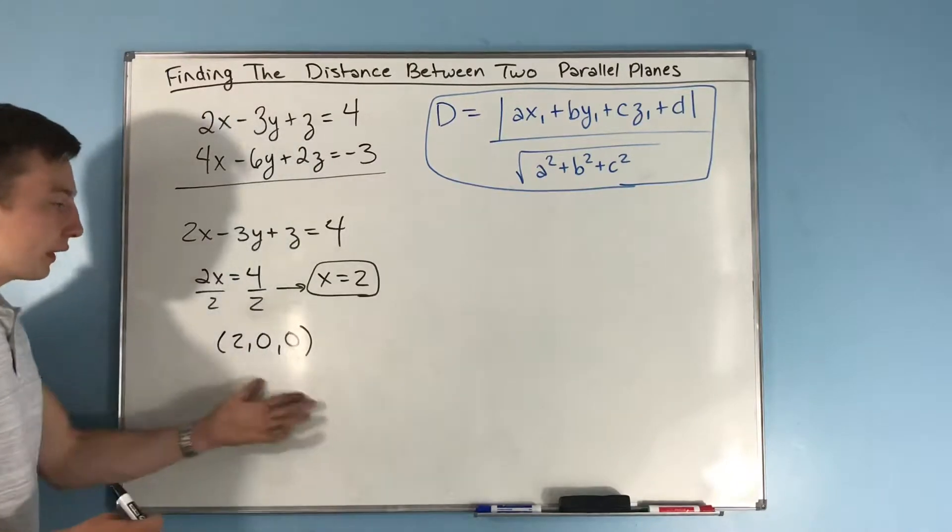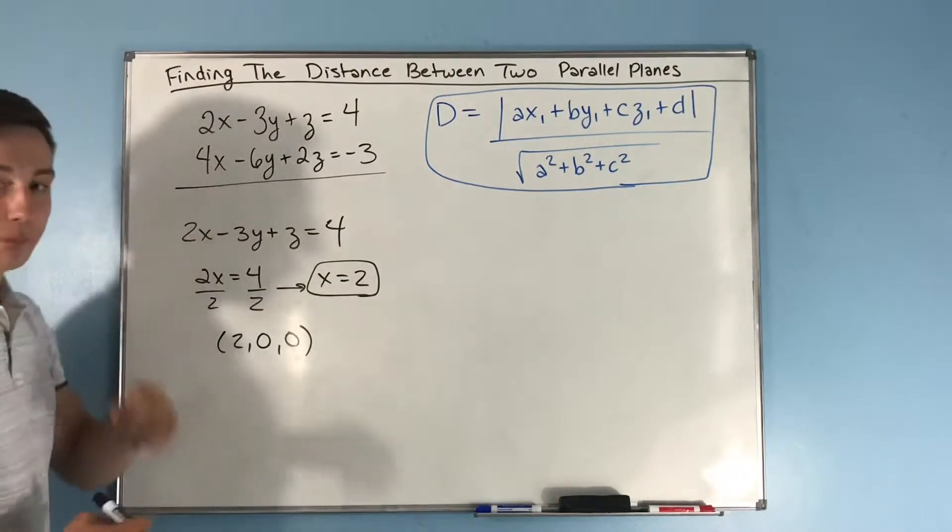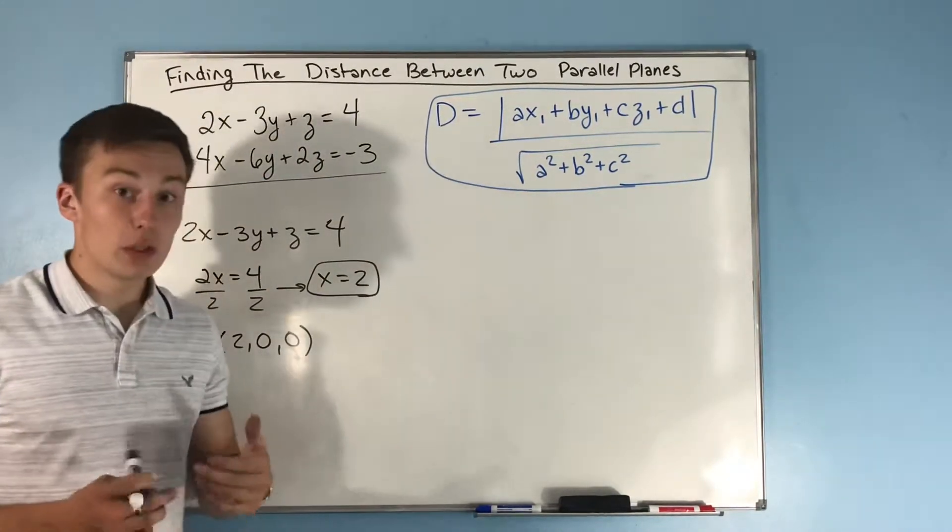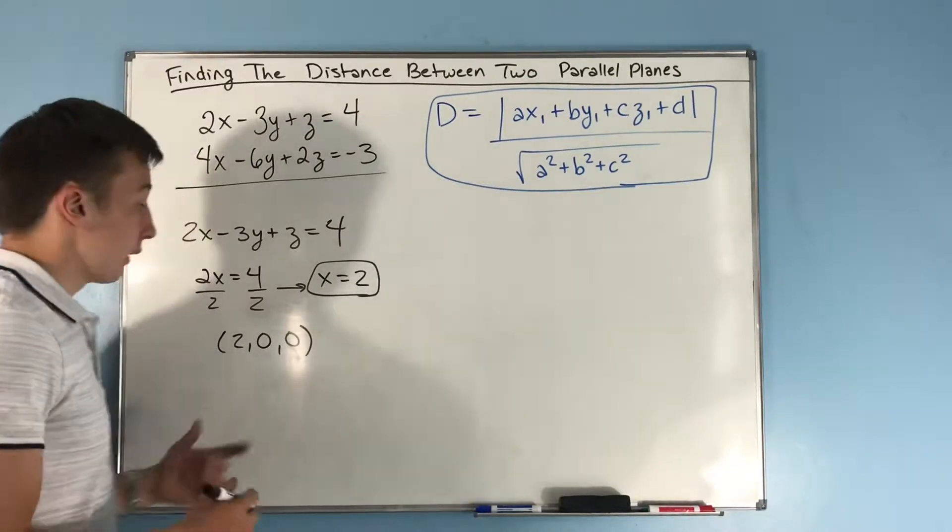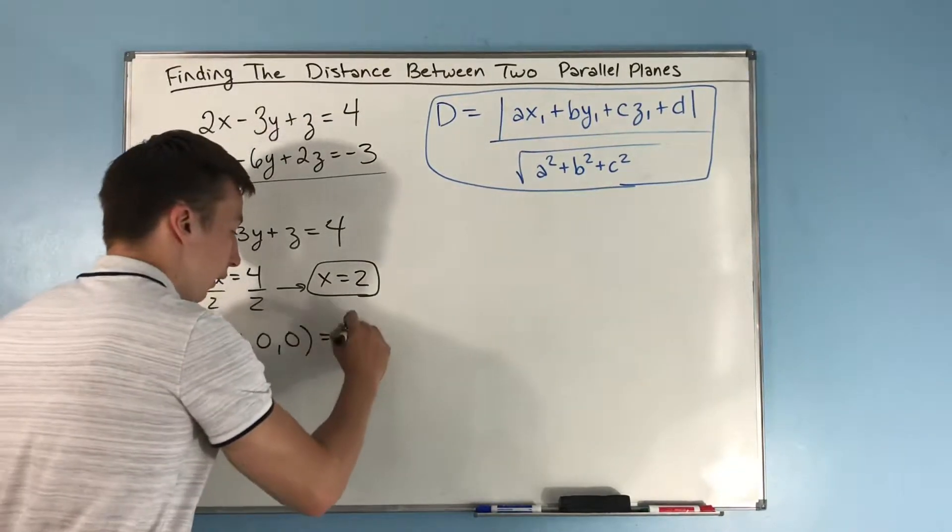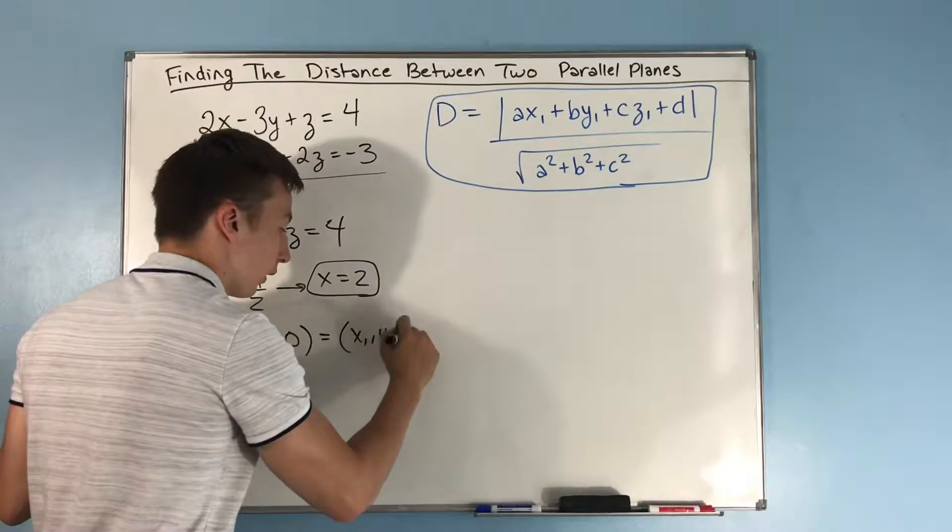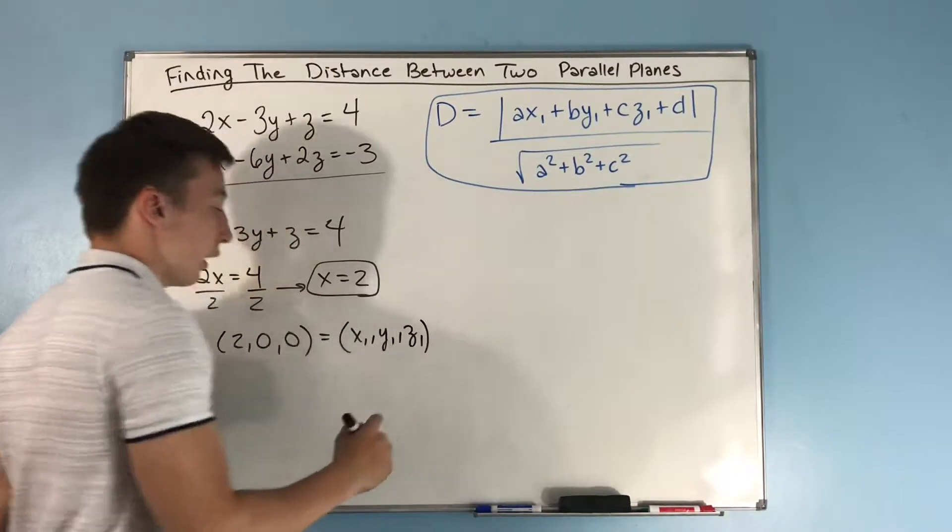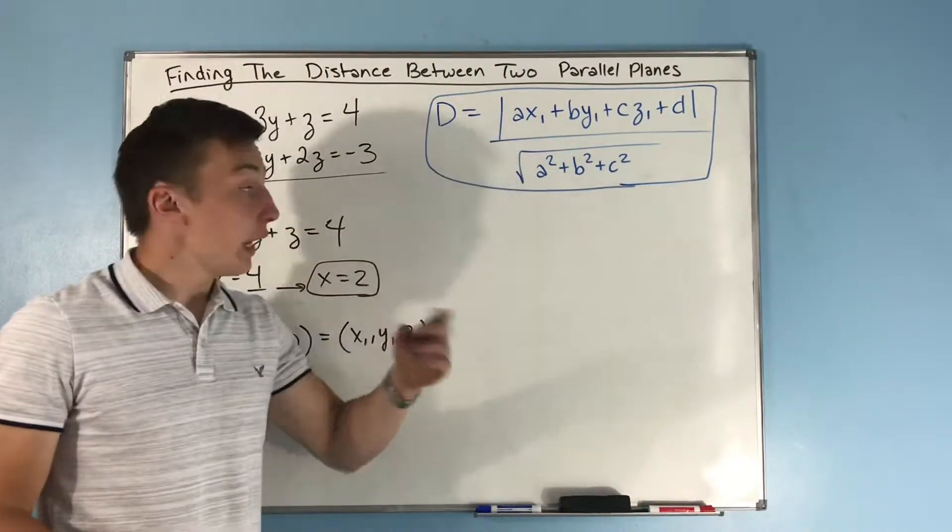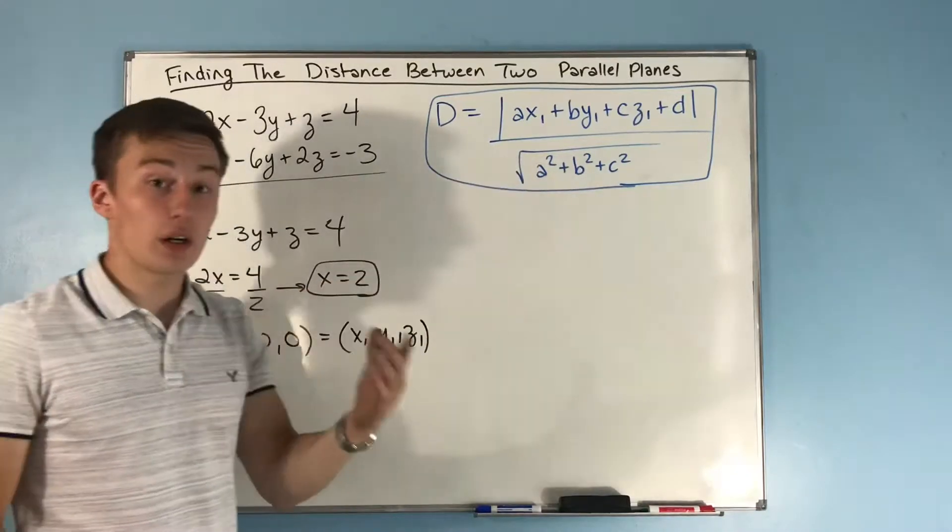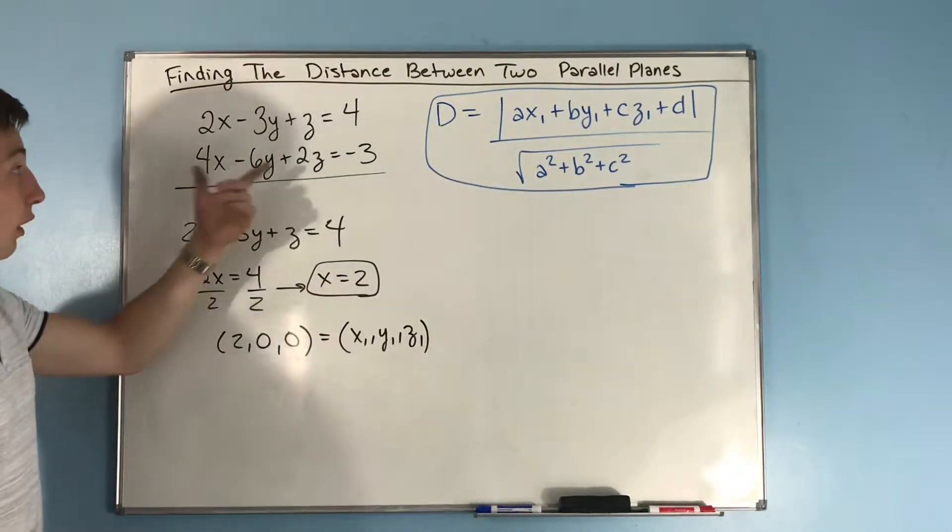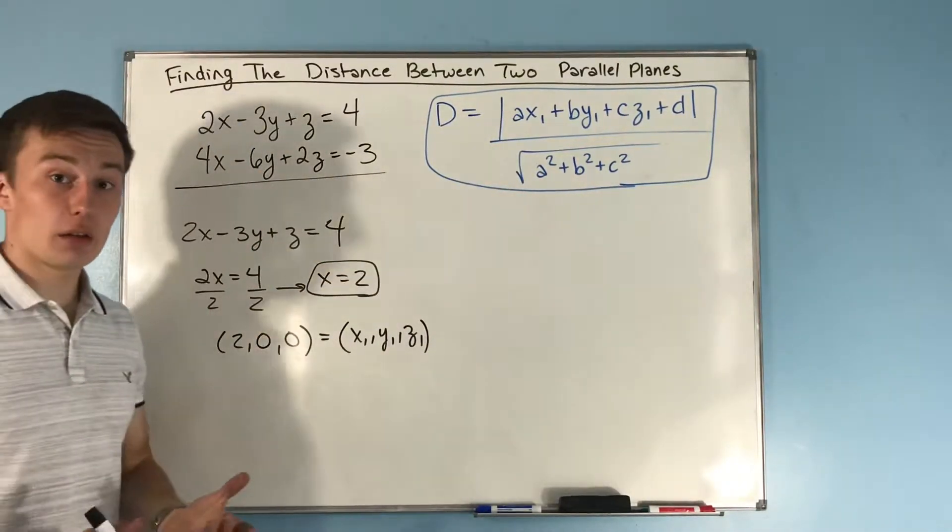This is a point that's on this plane. This is going to be your x1, y1, z1 in your equation. And your a, b, c, and d are going to come from this other plane.